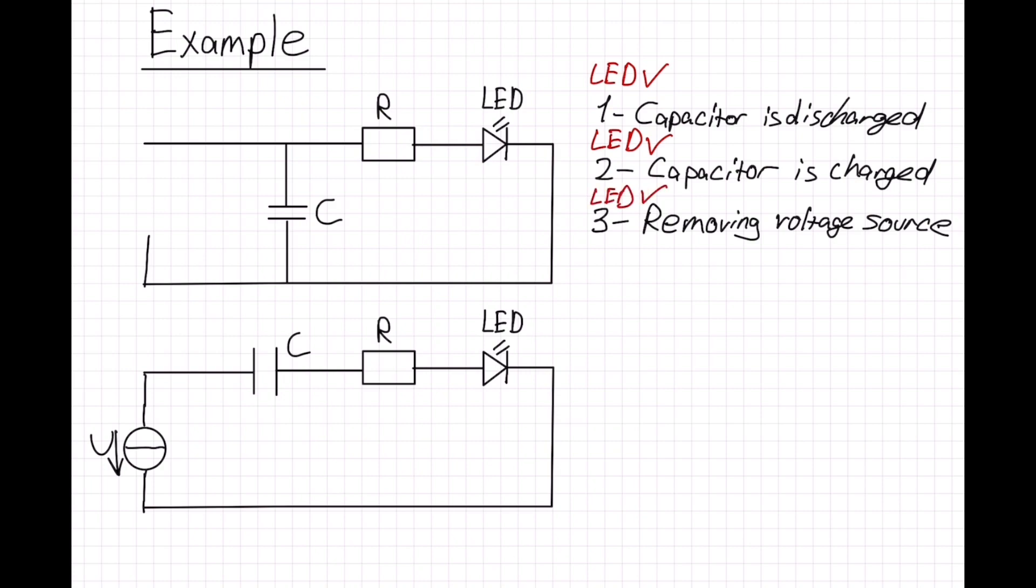And at the fourth stage, our capacitor is fully discharged means it has no energy storage anymore. And because of no energy, LED doesn't turn on. Let's look at our series circuit.